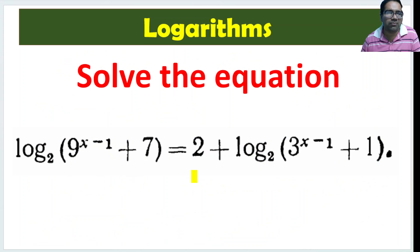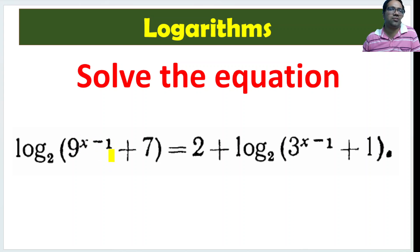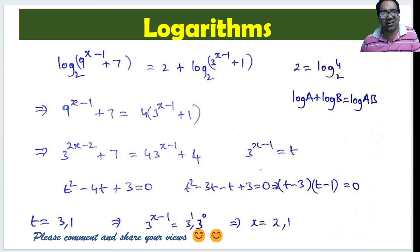To summarize: we wrote 2 as log₂(4), used log a plus log b equals log(ab), and recognized 9^(x-1) as (3^(x-1))² — these three steps let us solve the equation. Hope you like this. Thank you, guys.